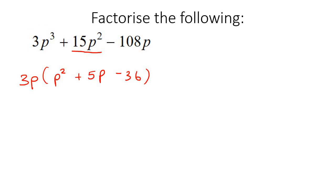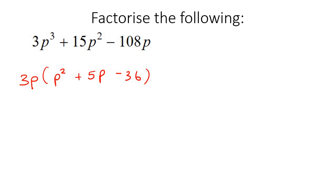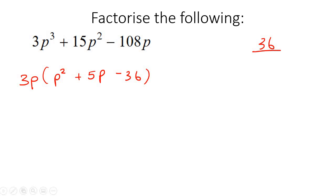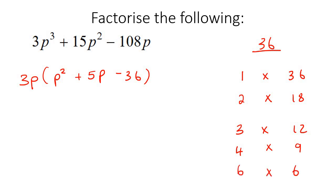Now what happens is that you're not done. Now we can realize that this is a trinomial — only two of the terms have variables, and the exponent here is exactly double the exponent over here. So now we factorize this trinomial. We take this number 36 and think of all the different ways you can multiply numbers to make 36: 1×36, 2×18, 3×12, 4×9, 6×6. Then you look at the coefficient 5 and try to see which combination can give you a 5 by adding or subtracting.